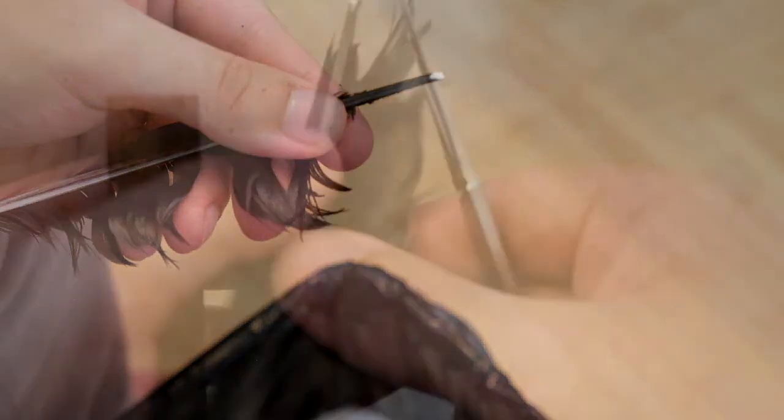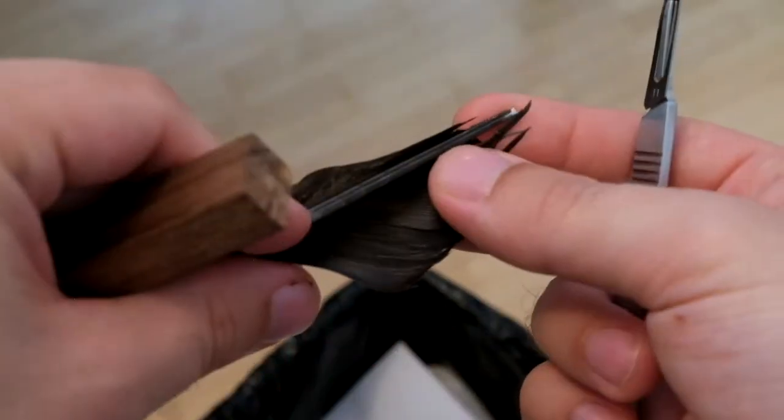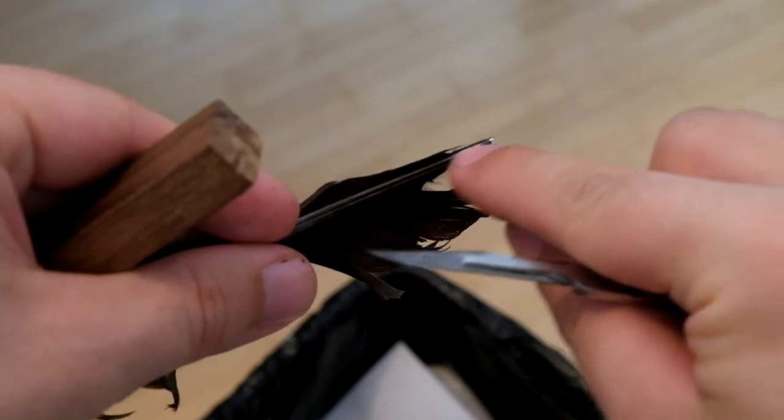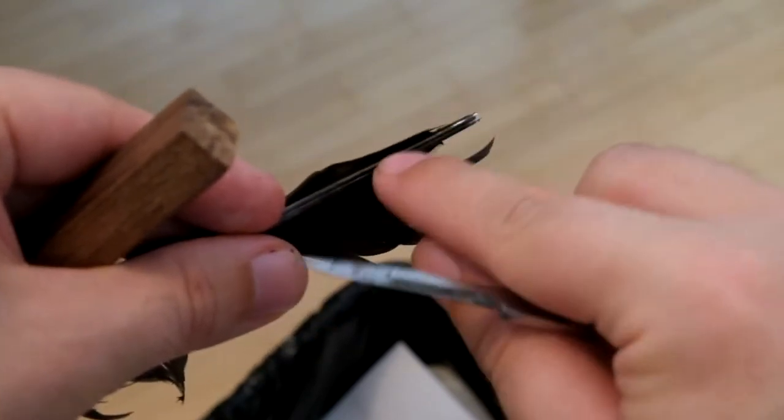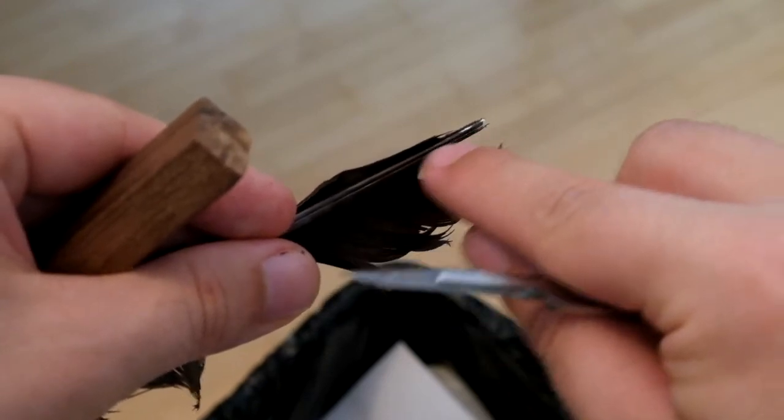Next, we'll need to remove the pith on what's to become the bottom of our plectrum. This is one of those bits that depend very much on your type of feather as well as the distance between your jack and its string.